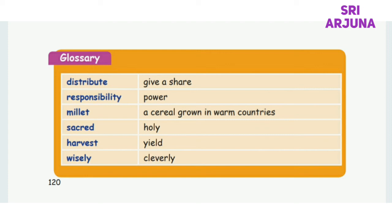Distribute, responsibility, millet, scared, harvest, and wisely. These words and their meanings: Distribute — give a share. Responsibility — power or duty. Millet — a cereal grown in warm countries. Scared — holy. Harvest — yield. Wisely — cleverly.